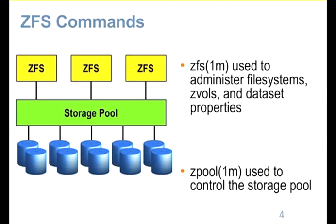So the whole of ZFS is designed to be administered with two commands. The zpool command to lay out the storage pool — this is where you choose whether you want to do mirroring or the equivalent of RAID 5 or RAID 6. And then within that storage pool, you create file systems. We call them datasets in ZFS because they can either be a POSIX file system or they can be what we call a ZVOL, which is a block and character device that looks like a disk, but it's just a chunk of your storage.